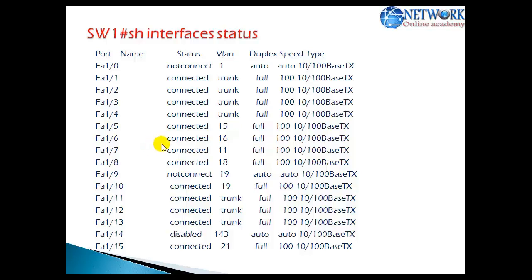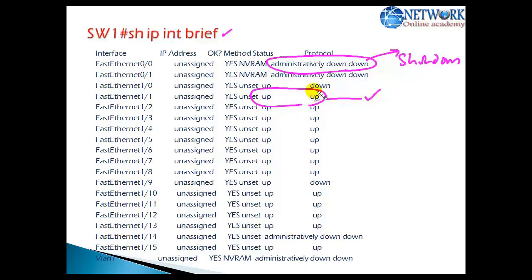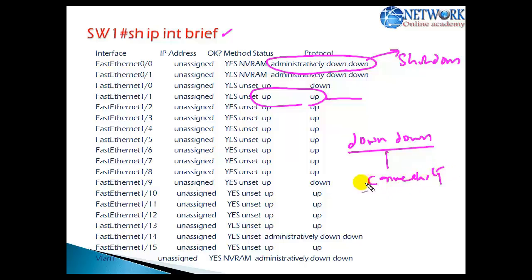Another useful command is 'show ip interface brief,' which is very useful especially on routers. Here you'll see 'administratively down,' which means the port is in shutdown state. All interfaces should show 'up/up.' If you see 'up/down,' there is a protocol mismatch — this is more applicable in WAN setups on serial interfaces, which I covered in a separate video on WAN connectivity troubleshooting. If you see 'down/down,' there is a connectivity issue — possibly a port in shutdown state on the remote side. The goal is to see 'up/up' on all your interfaces.